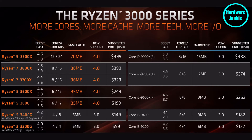Intel also has a new generation coming out this year — the 10th generation. That's going to make the front number a 10, so it won't be a four-digit number anymore, it'll be five digits. It means the same thing: a 10 followed by three digits. So instead of the Core i9-9900K, you'd have the Core i9-10900K. The naming scheme is a bit weird, but those first digits indicate your generation, and that's significant.